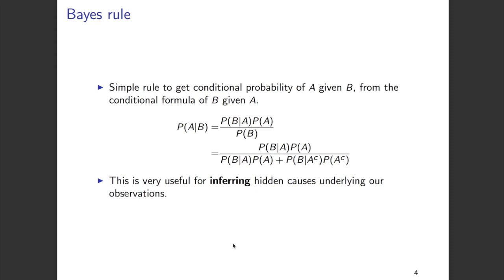Sometimes we may not know the probability of B. In those cases, we can expand probability of B in this way. Probability of B can be written as probability of B given A times probability of A, plus probability of B given A complement times probability of A complement. A and A complement form a partition, that is why we are able to write the probability of B in this form.